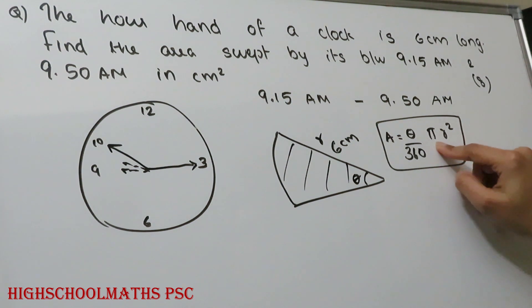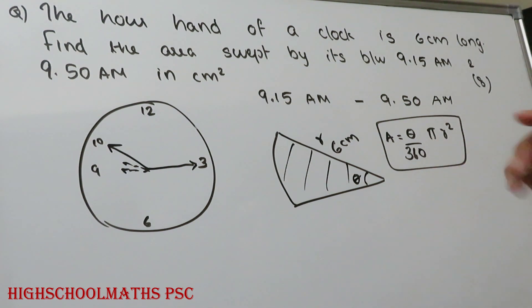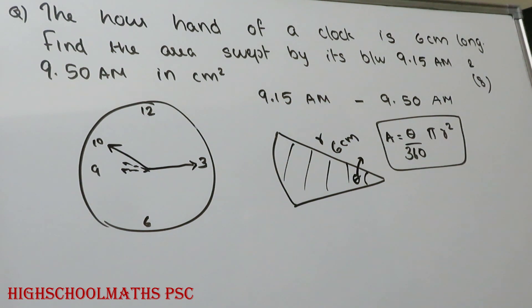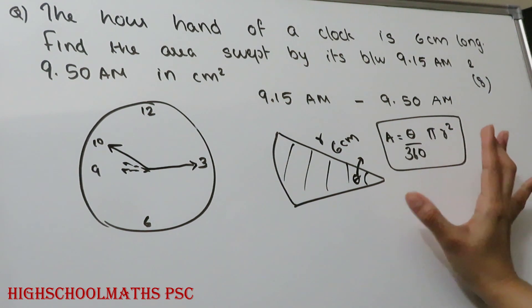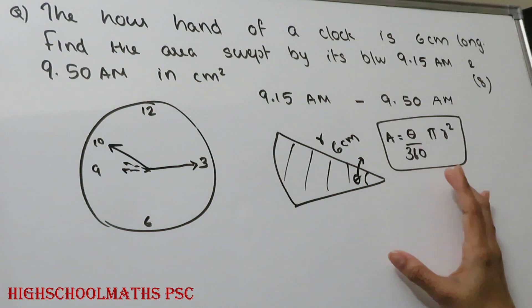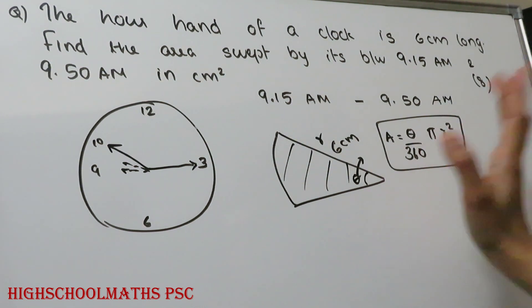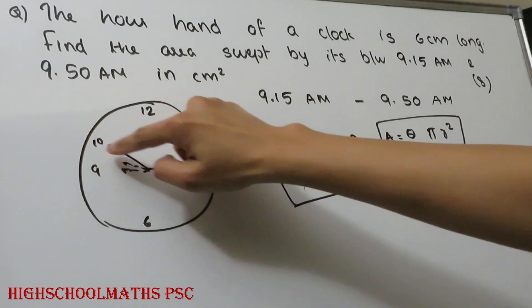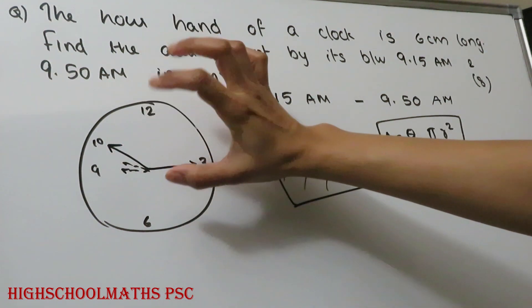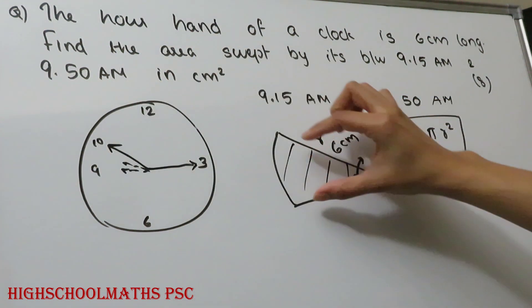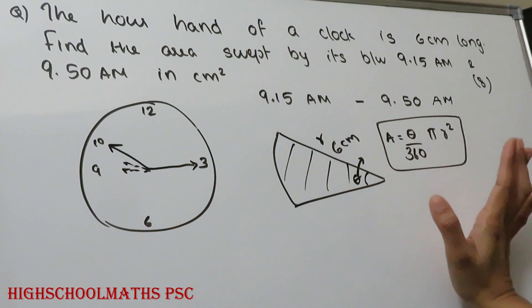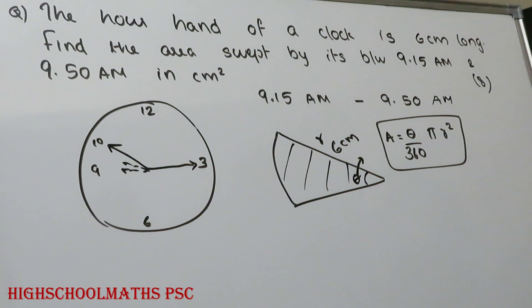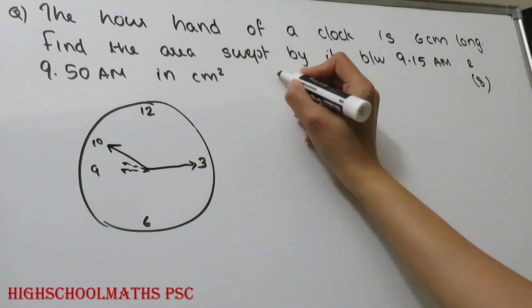In this formula, the value of π is 22/7. Here θ is the central angle, and r is the radius. We will use this equation to answer the question.